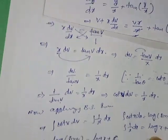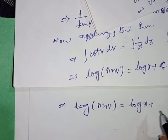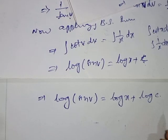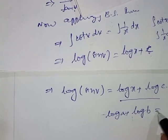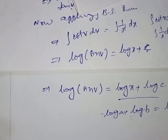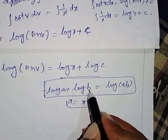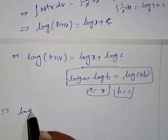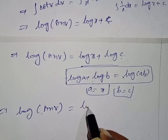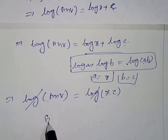The constant C can be written as log(c). So log|sin(v)| = log|x| + log(c). Using the log property log(a) + log(b) = log(a·b), the right-hand side becomes log(x·c). The logs cancel on both sides, giving sin(v) = x·c.